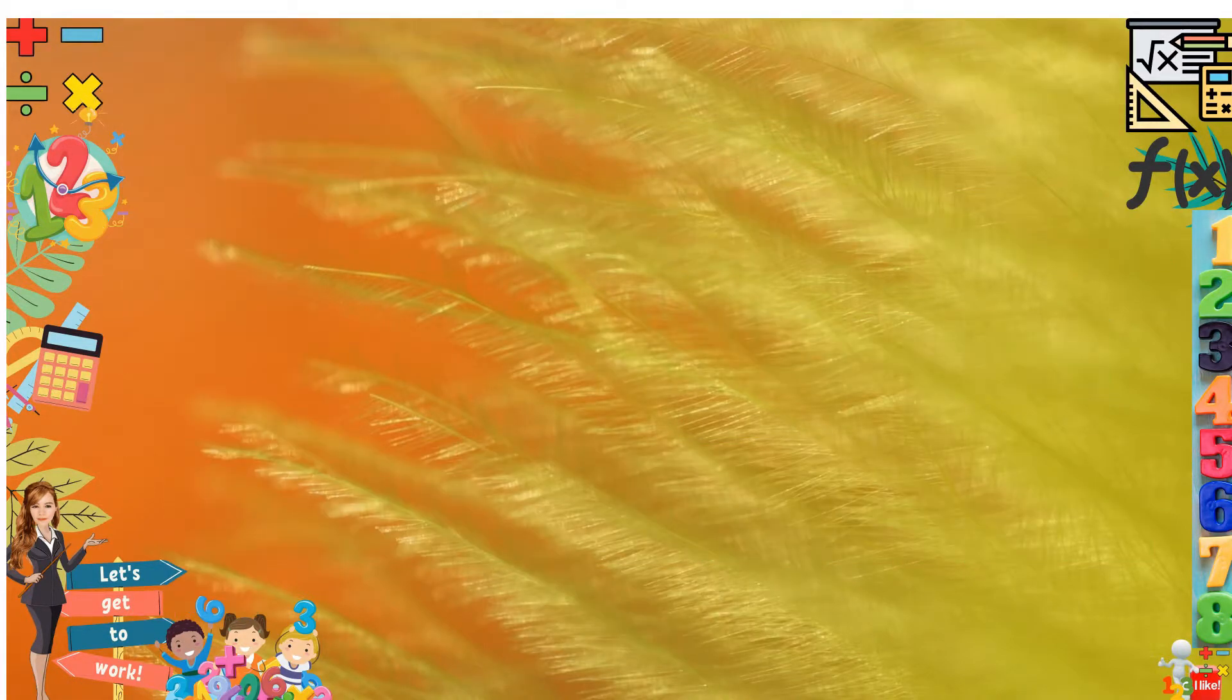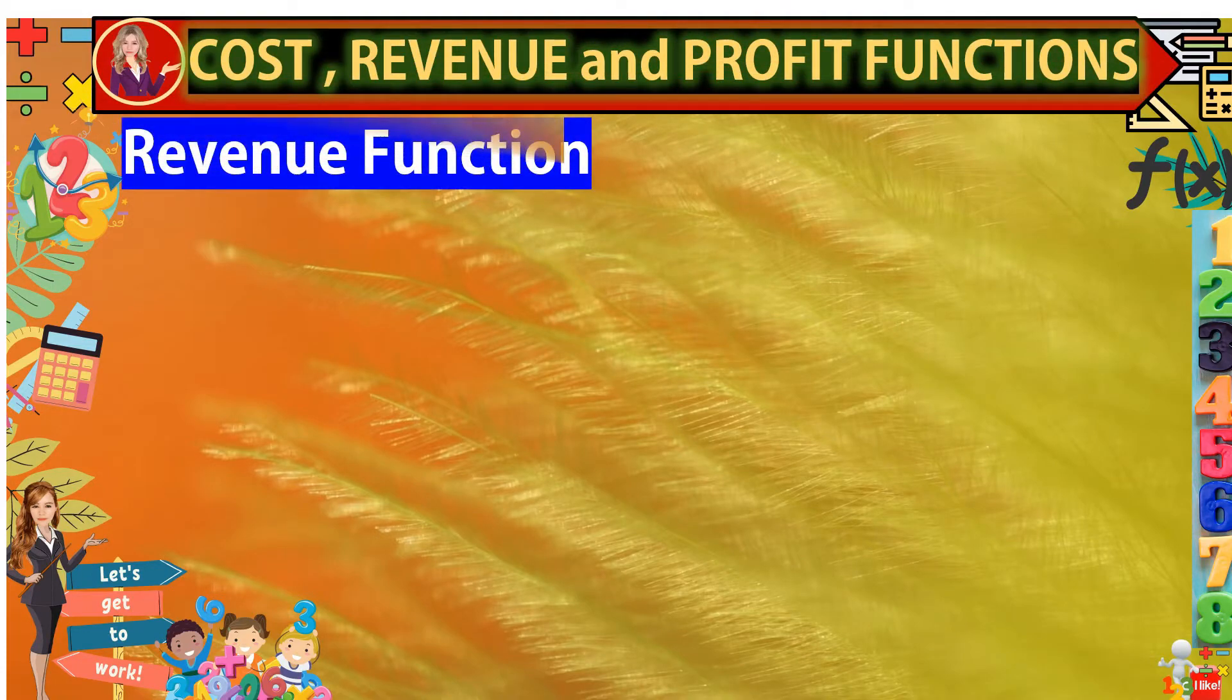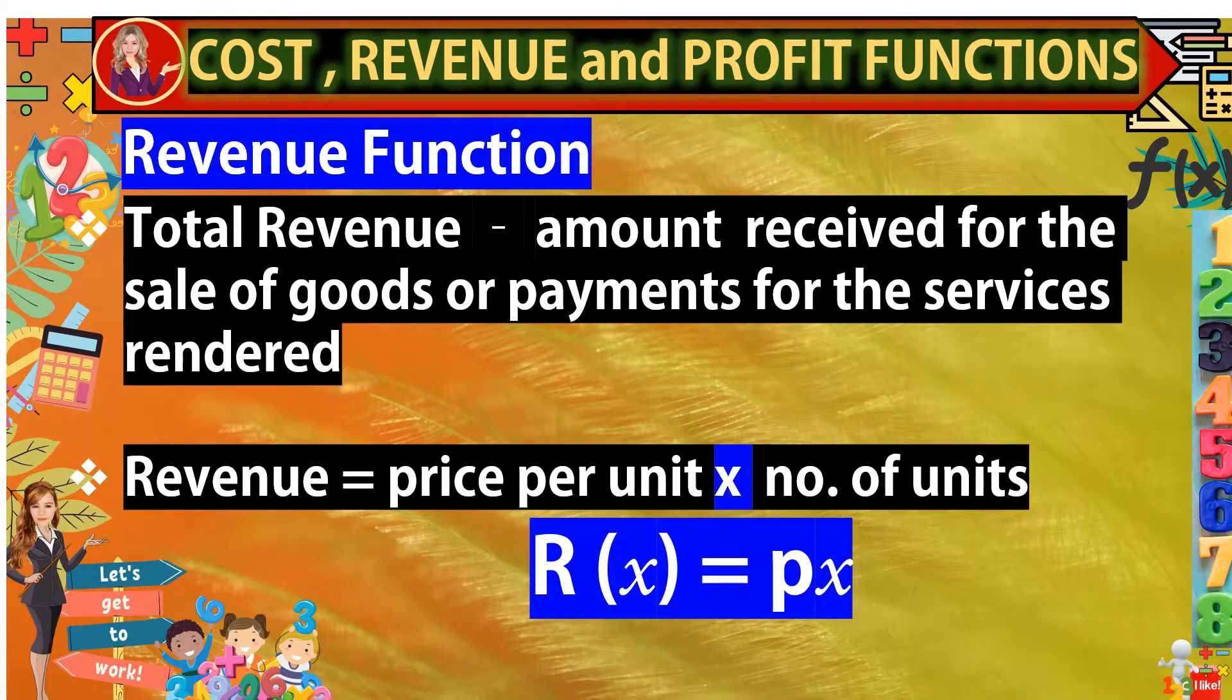As the revenue function, we have the total revenue. Revenue, it is the amount received for the sale of goods or payments for the services rendered. So to get the revenue, we will just have the product of price per unit times the number of units. R(x) is equal to px.